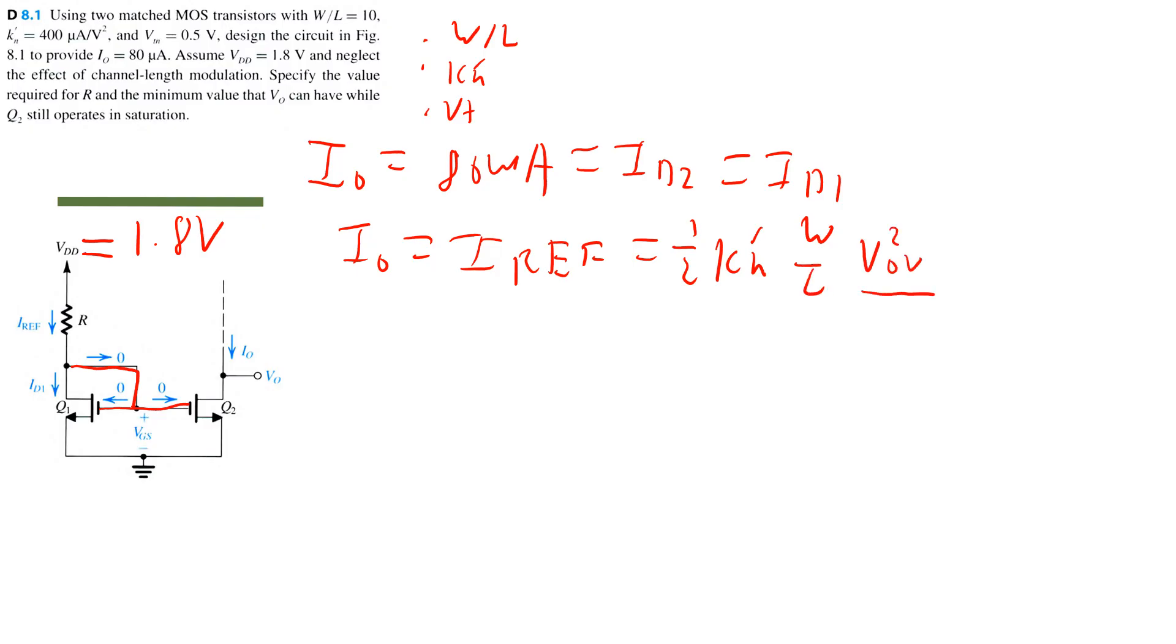Let's go ahead and solve for V overdrive, because I know all of my other terms. So V overdrive will be equal to the square root of 2 times IO divided by KN' W over L. Or the square root of 2 times 80 microamps divided by 400 microamps per volt squared times 10. This equals 0.2 volts.